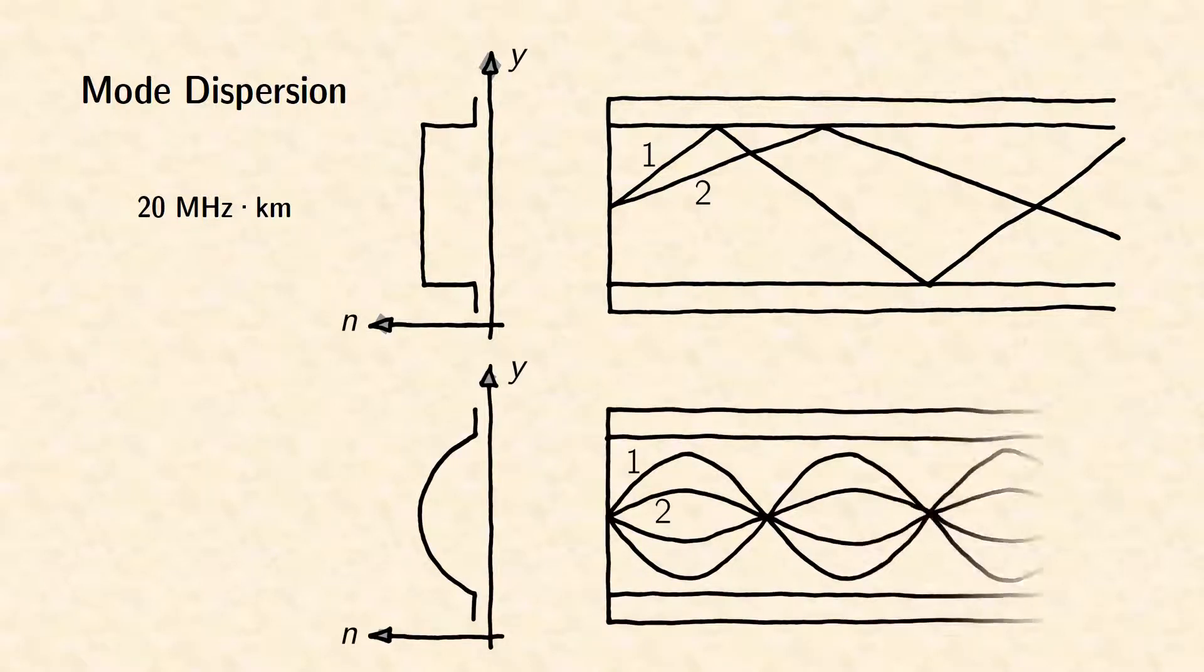A better approach are graded index fibers. These fibers are characterized by a parabolic profile of the refractive index in the fiber core. The graded index profile acts as a lens and bends all waves to focal points. The total path length of the small angle mode 1 in the image is still longer than that of the large angle mode 2.